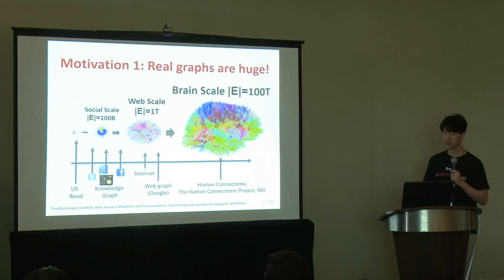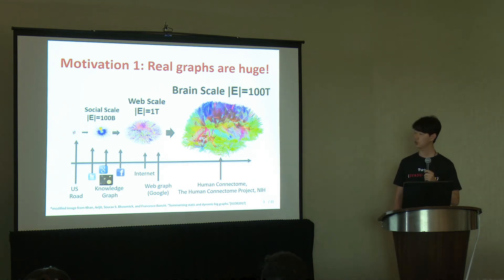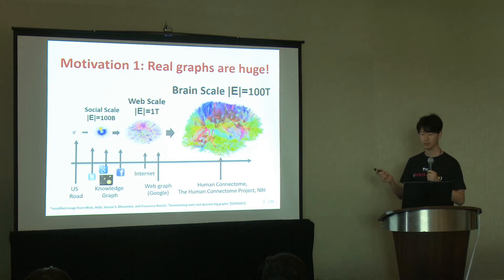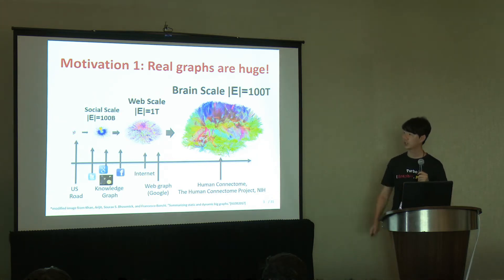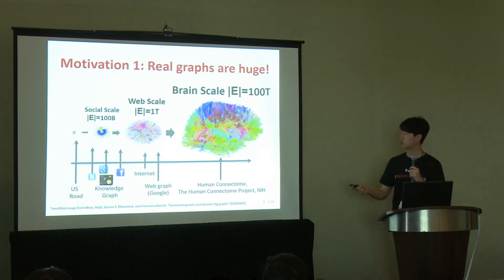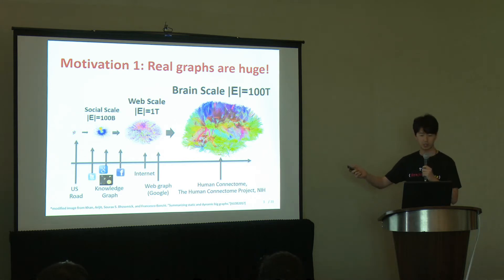The first motivation is that real graphs are really huge. Typical social-scale graphs such as social networks and knowledge graphs contain 100 billion edges, while web-scale graphs have more than a trillion edges. Furthermore, the size of brain graphs, known as human connectome, can reach up to 100 trillion edges. This calls for a system that can efficiently handle such very large-scale graphs using distributed machines.